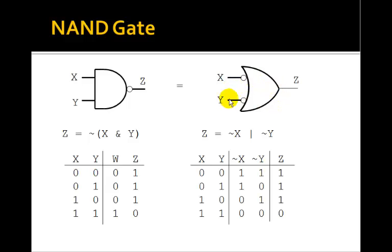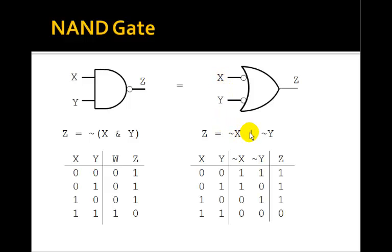Now take a look at this symbol over here. It's a symbol for an OR gate with two bubbles on the inputs. This means that the output Z, since these are NOT operations — inverters — the output Z is just NOT X OR NOT Y.